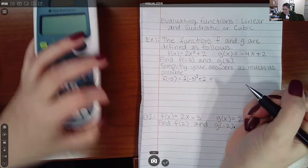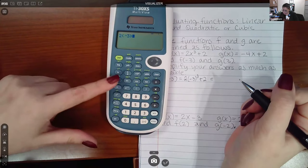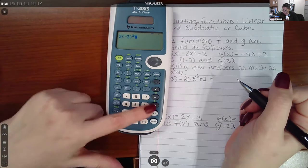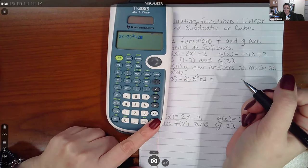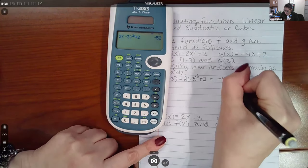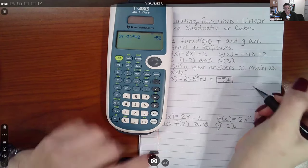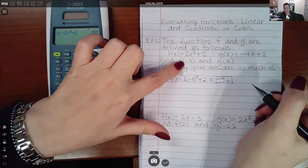Now you can type all of that in a calculator. Your calculator does every single bit of that. I typed in the whole thing. It looks exactly like it does on my paper. And so then the value I get is negative 52, and that would be the answer for this particular part.